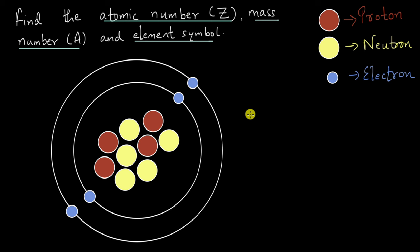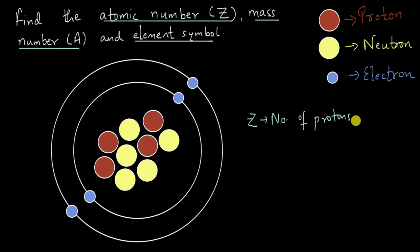So let us start with the atomic number Z. The atomic number Z is basically the number of protons in the atom. If we count the protons, which are the red circles: 1, 2, 3, and 4. So the atomic number of this element is 4.